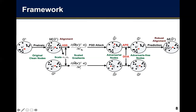We apply the scaled gradients to PGD attack to attack these two graphs and generate perturbed graphs hat-G1 and hat-G2. Then we integrate the adversarial perturbation elimination with Dirac delta approximation technologies to get two adversarial-free graphs, bar-G1 and bar-G2. Finally, we feed these two adversarial-free graphs into the pre-trained network alignment model to produce the robust network alignment result.